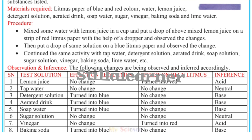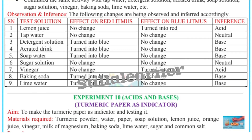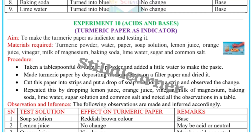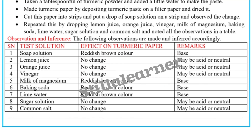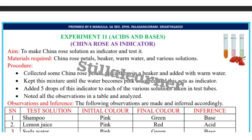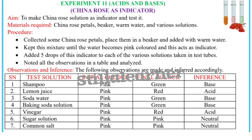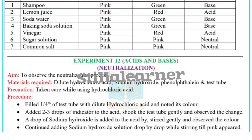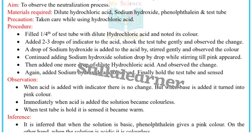Experiment number ten is again acids and bases: turmeric paper as indicator. Experiment number eleven is again acids and bases: china rose as indicator. Experiment number twelve is again acids and bases: neutralization.